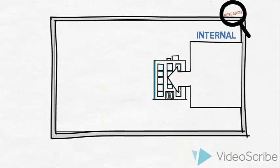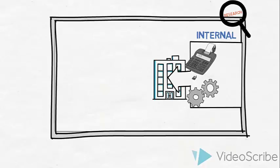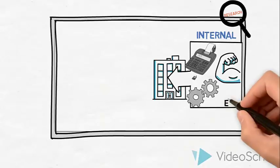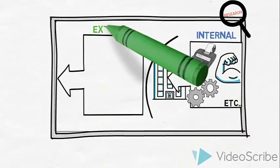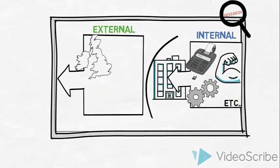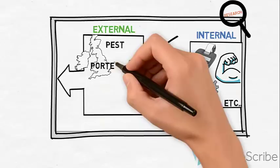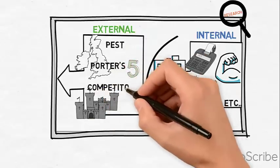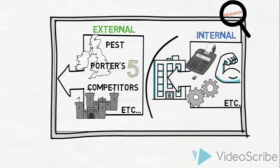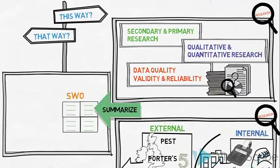The gathered data might be used in a process of conducting different analyses. Internal analysis, which could include a look at the company accounts, current business model, core competencies, and others. And external analysis, such as PEST, Porter's Five Forces, competitor analysis, and others. And ultimately, they might summarize all their research in a SWOT analysis.